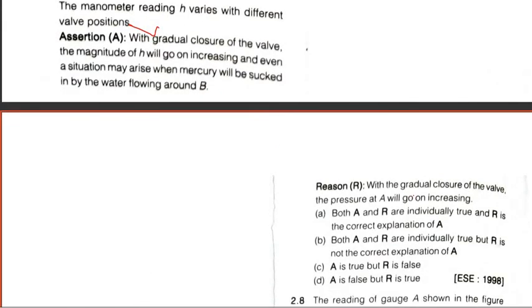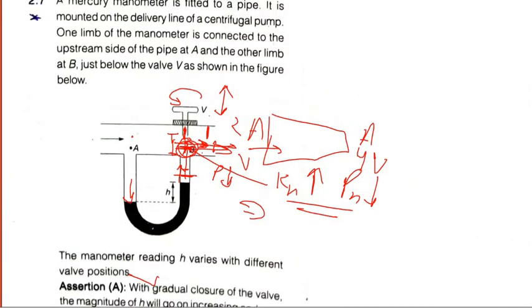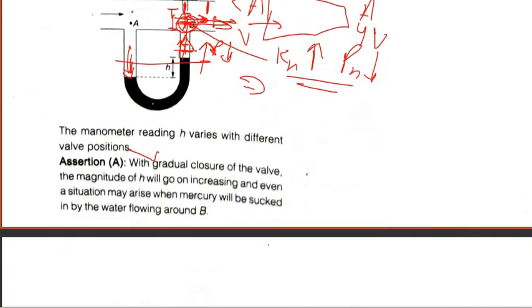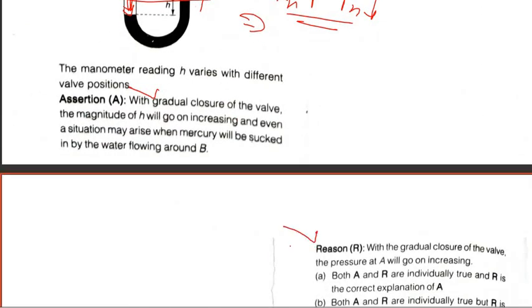That is the reason why the assertion is correct. Because with the gradual closure of the valve, the pressure at A will go on decreasing. Here it will decrease and total energy will be same. So here pressure will increase and here it will decrease. Assertion is correct and its reason is also correct. So answer will be A. You can rewind the video for this concept.